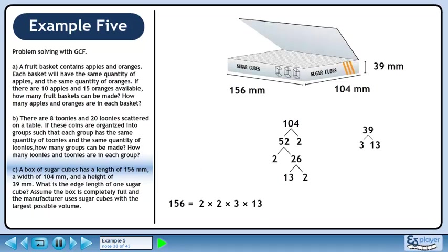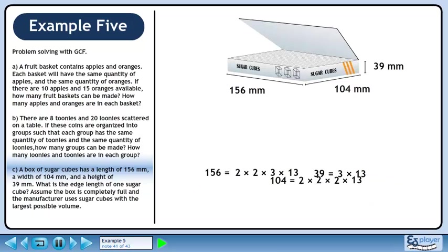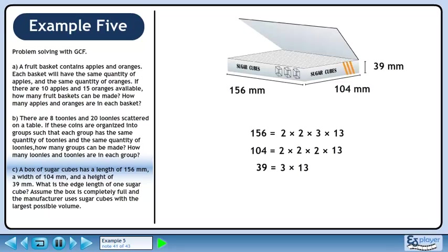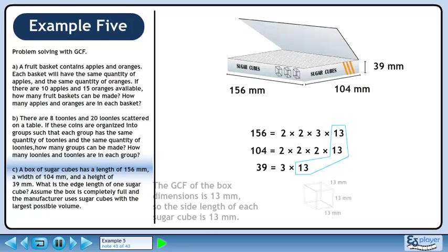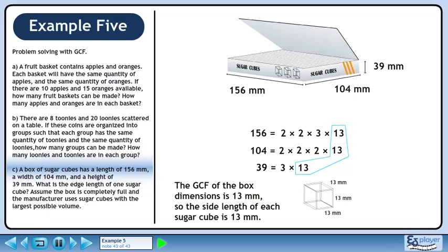From the first factor tree, we can write 156 as a product of its primes. From the second factor tree, we can write 104 as a product of its primes. Finally, we can write 39 as a product of its primes. Now we'll find the GCF. 13 is the only number common to all three sets. The GCF of the box dimensions is 13 mm, so the side length of each sugar cube is 13 mm.